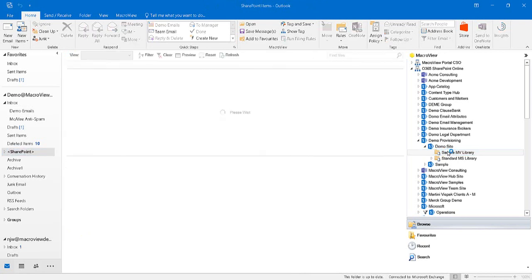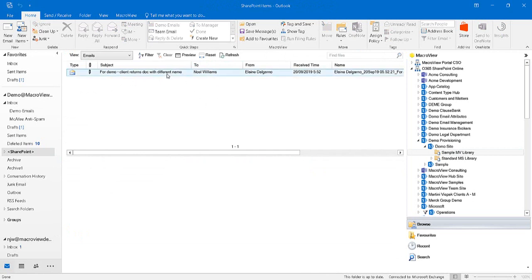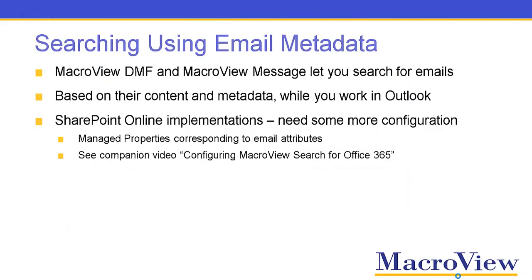Click on the library we see in the emails view. We see that the properties of the email have been recorded automatically — it's a MacroReview-compatible library. MacroReview DMF and MacroReview Message let you search for emails in SharePoint. That search can be based on their content and/or their metadata, and you can do the search while you work in Outlook.